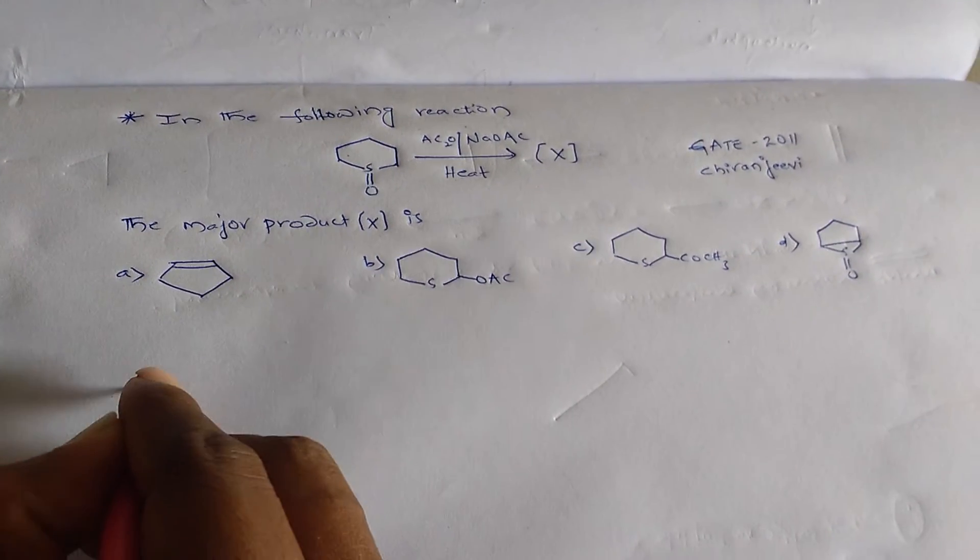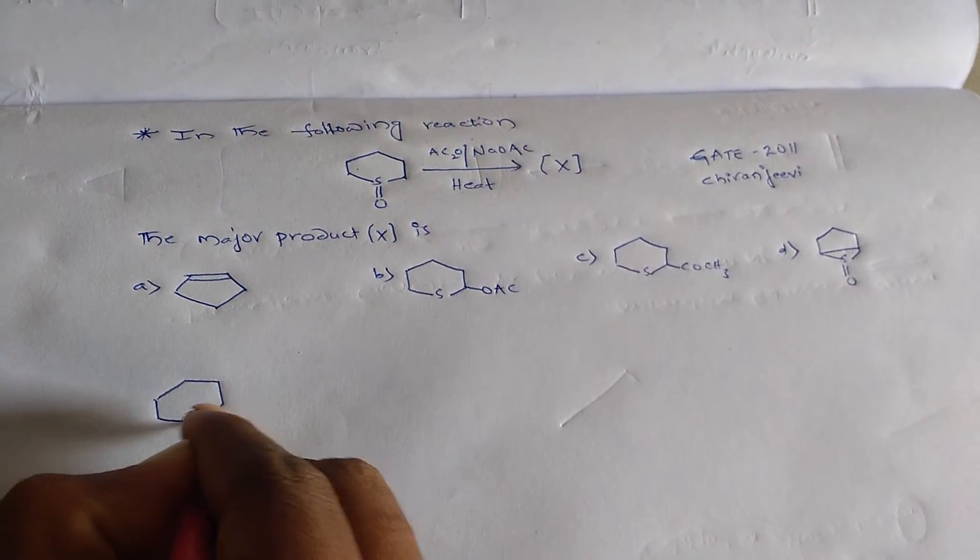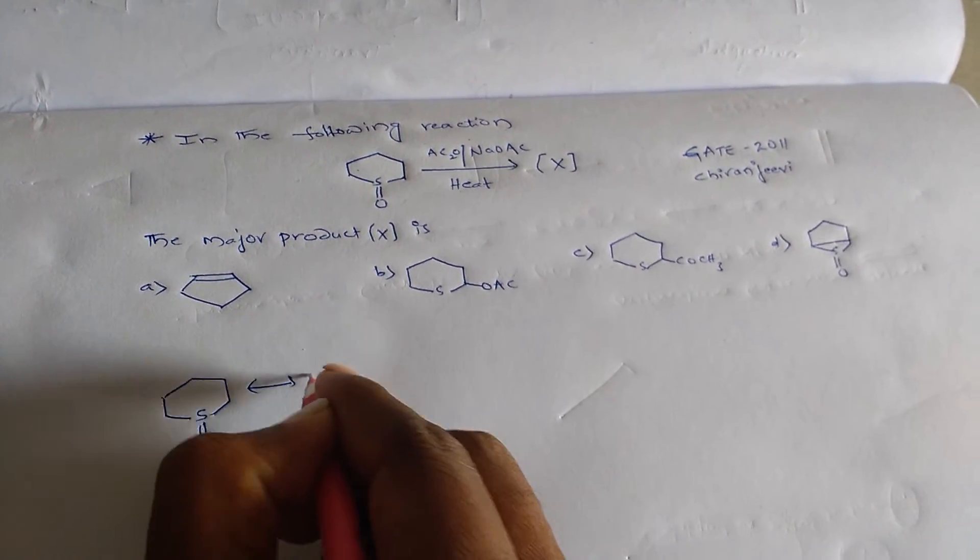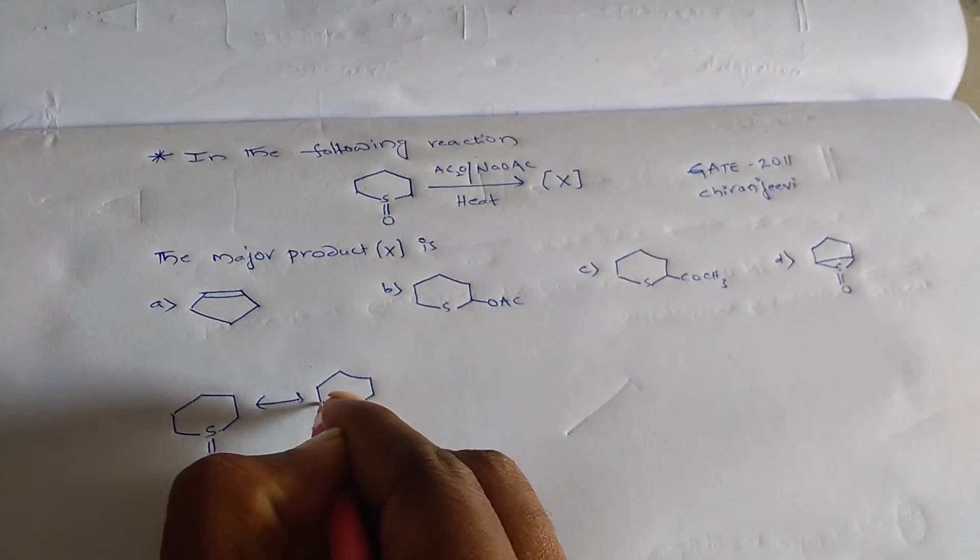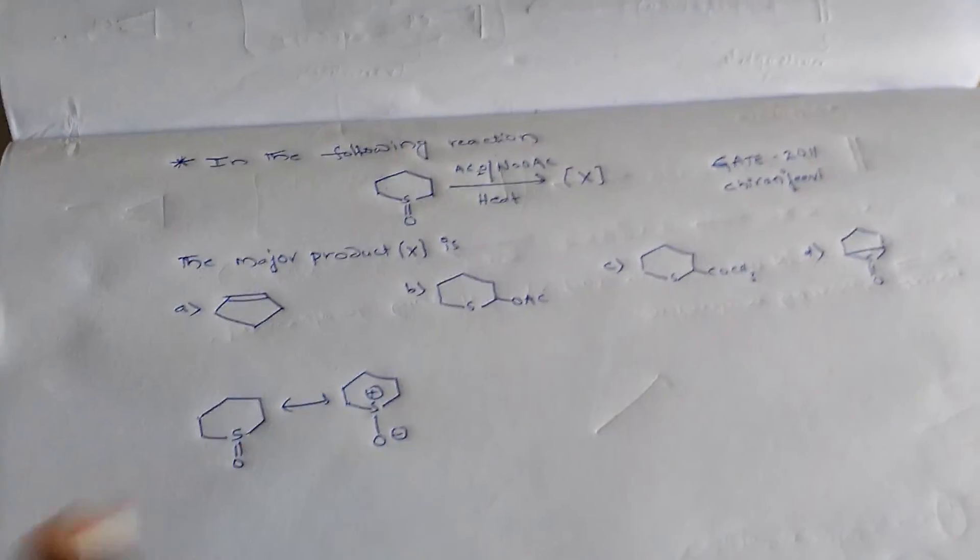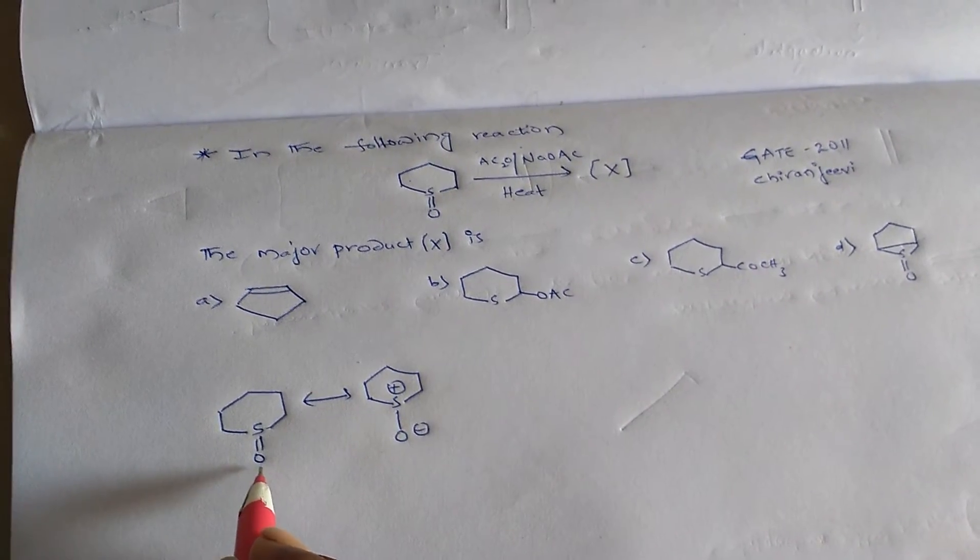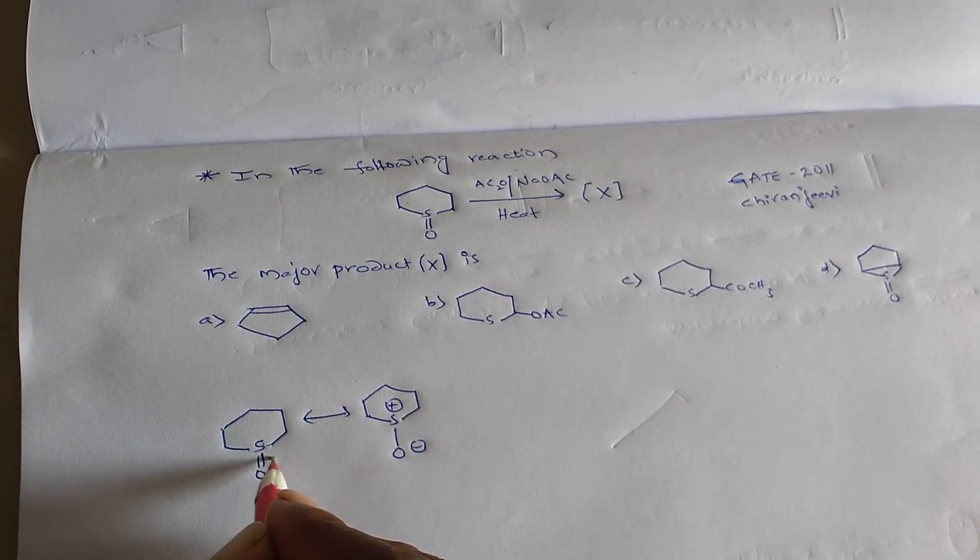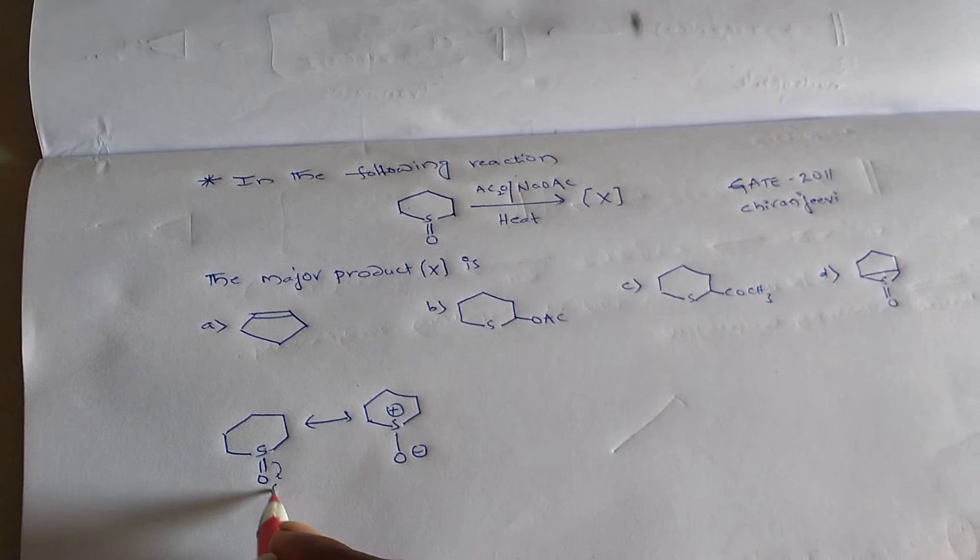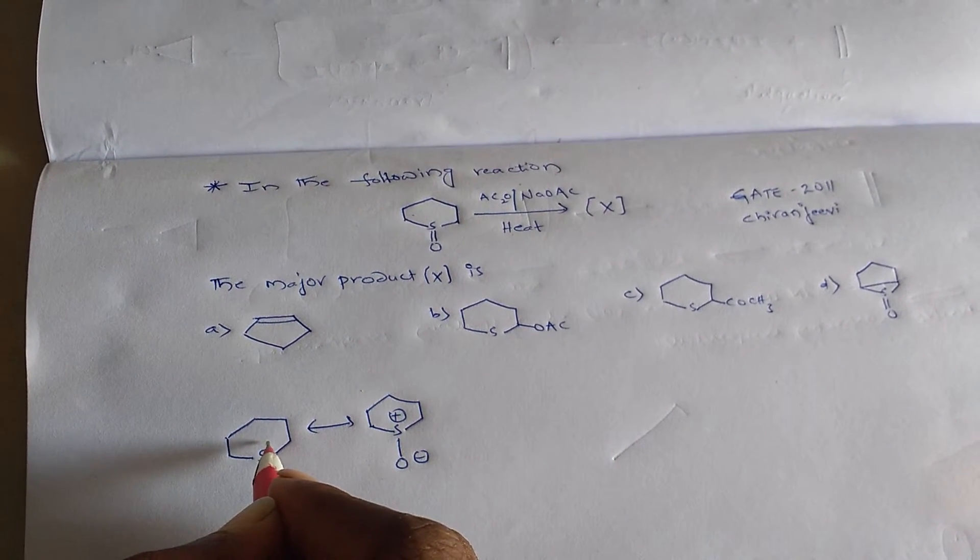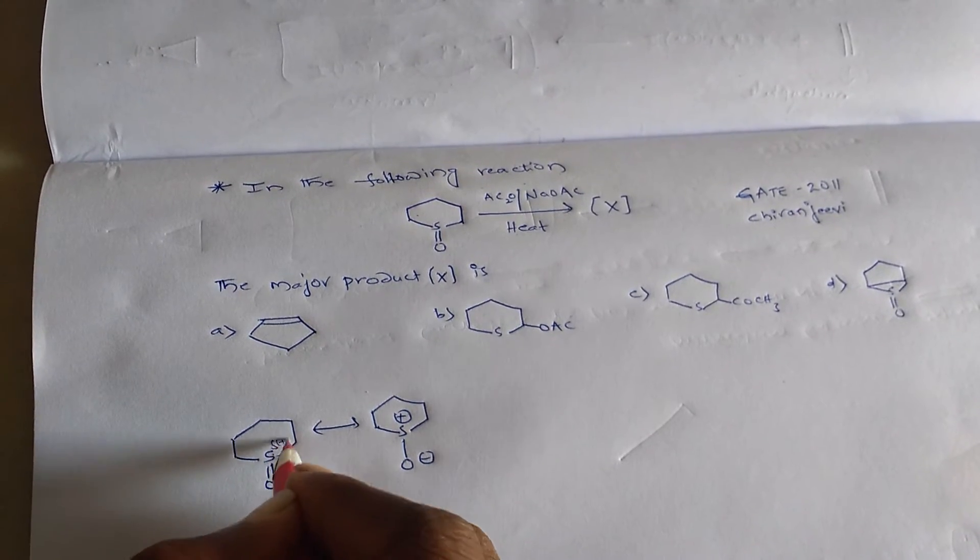First, we can write this sulfoxonium compound in ionic form because the electronegativity of oxygen is more than sulfur. That's why the electrons drag towards oxygen, giving it a partially negative charge and sulfur gets a partially positive charge.